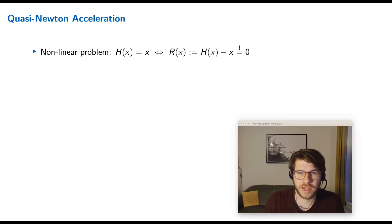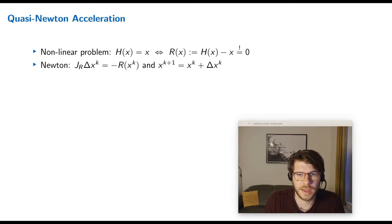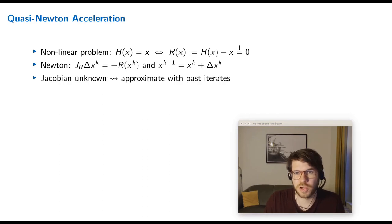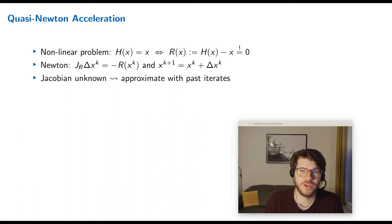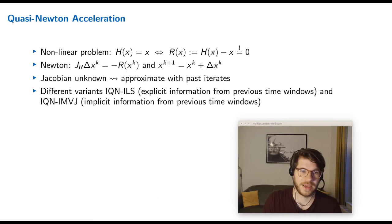For some coupled problems Aitken under-relaxation is a good choice because it is very robust, but for most cases it is outperformed by quasi-Newton acceleration. The trick is to reformulate the fixed-point equation as a nonlinear problem in residual notation, and then apply Newton's method. The problem is that we do not know the Jacobian because we have black-box solvers — so we need to approximate it, hence the name quasi-Newton. The only thing we can use to approximate it are past iterates from past iterations or even past time steps.